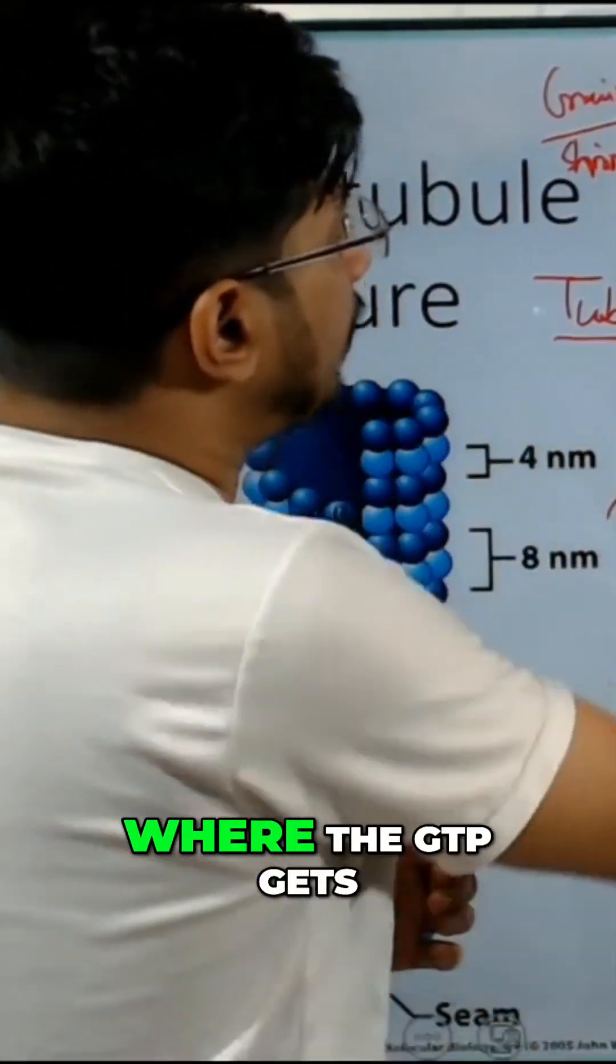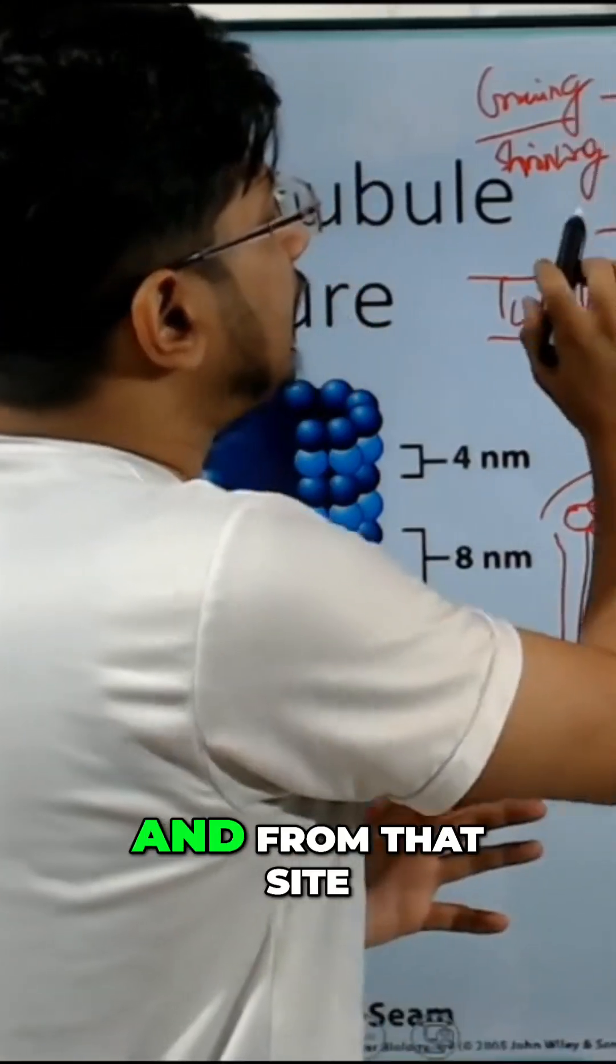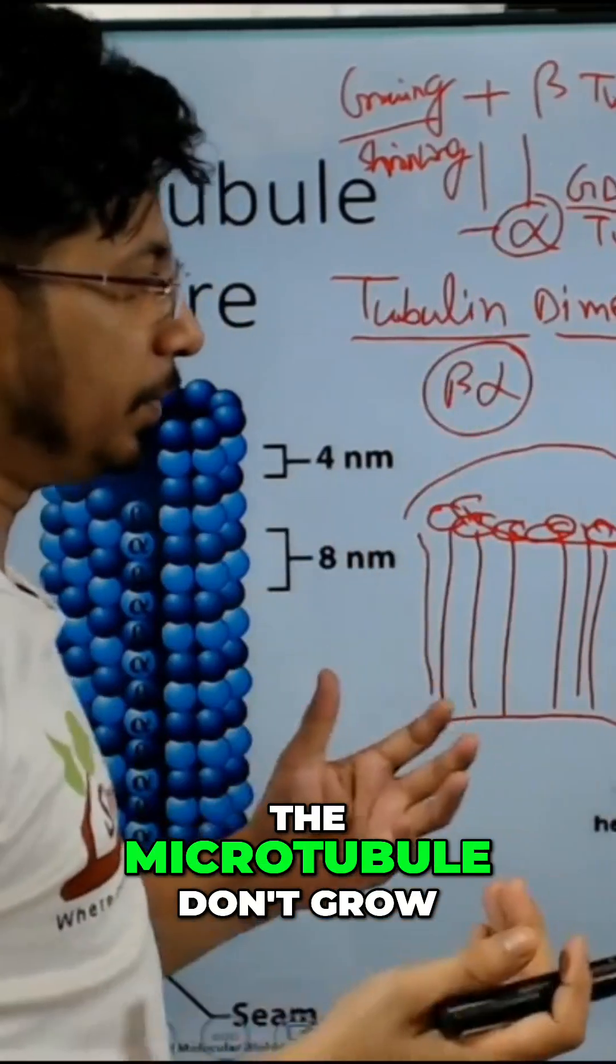On the opposite pole, where GTP gets hydrolyzed into GDP and PI, the GDP gets dissociated and from that site the microtubule does not grow.